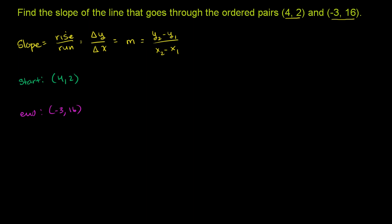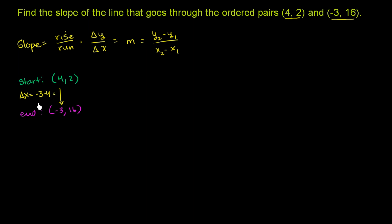What is the change in x in this scenario? We're going from 4 to negative 3. You have to go down 4 to get to 0, and then down another 3 to get to negative 3. So our change in x is equal to negative 3 minus 4, which equals negative 7. If I'm going from 4 to negative 3, I went down by 7.